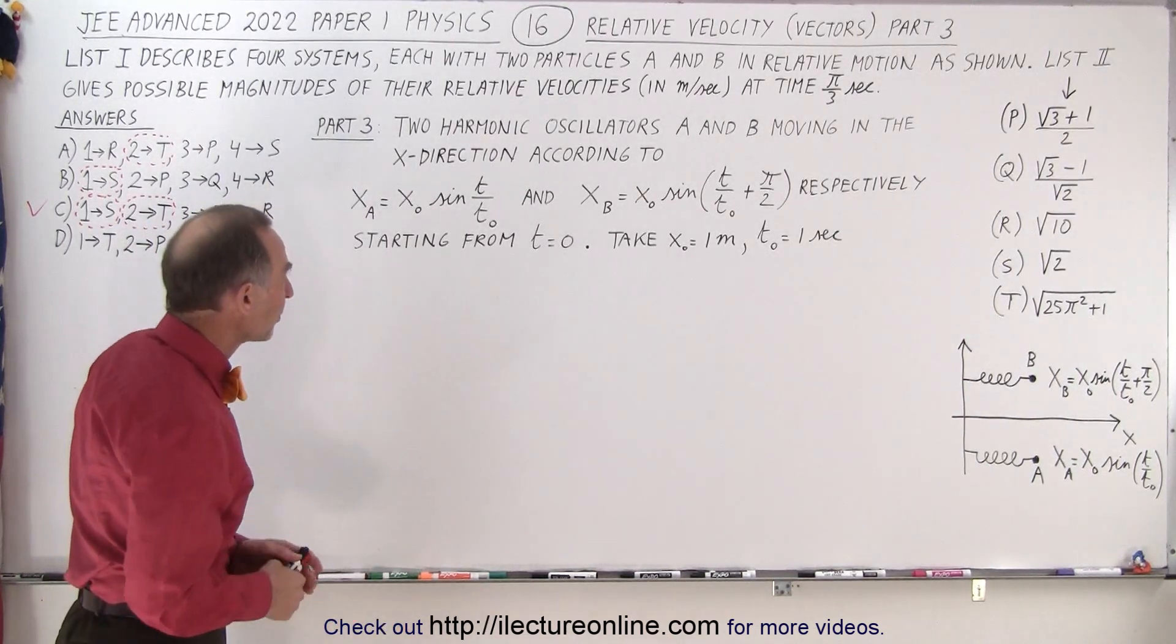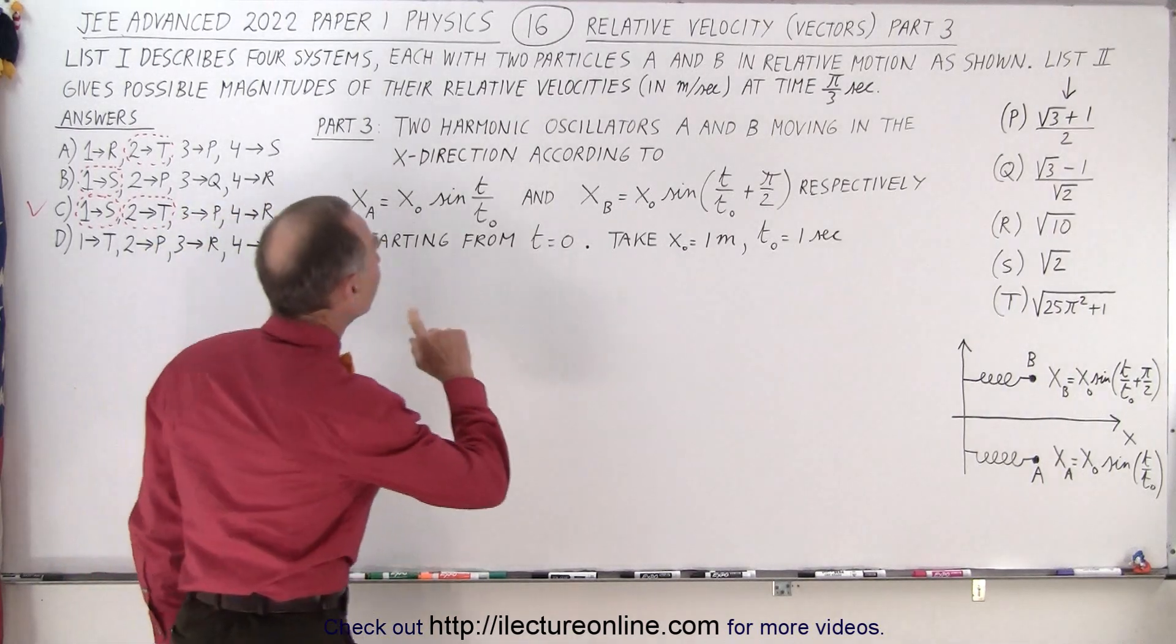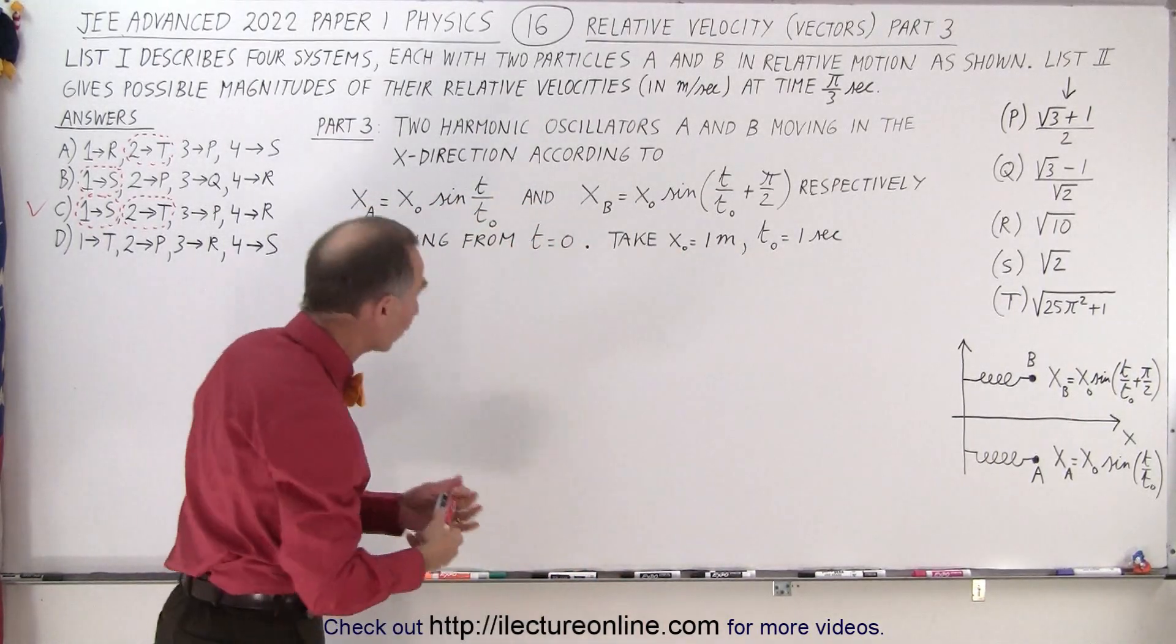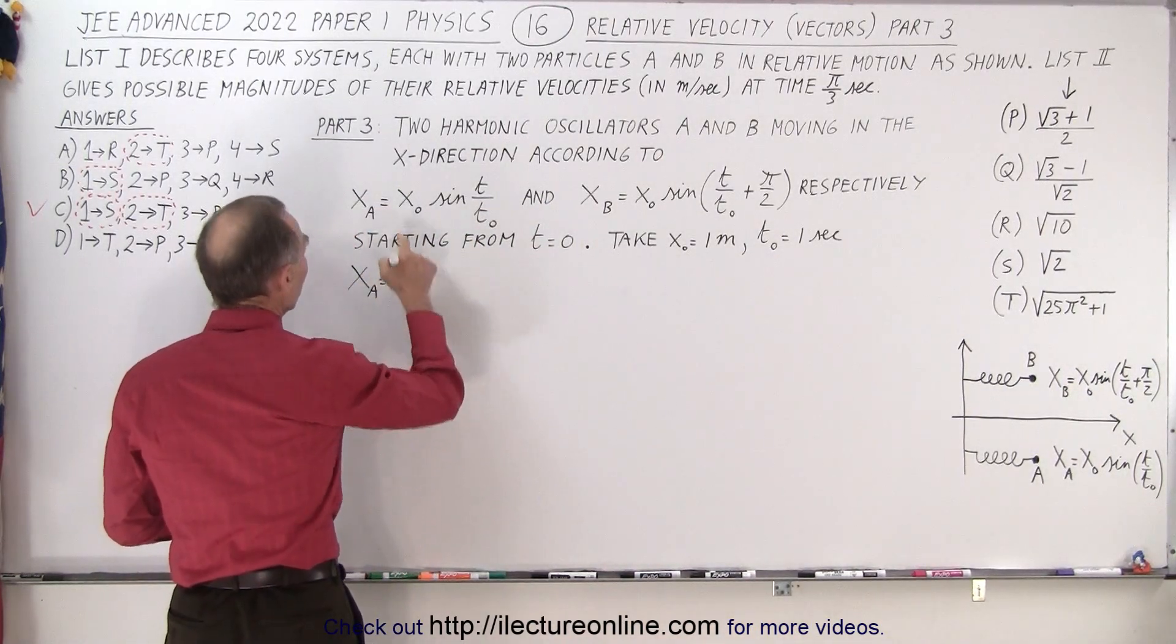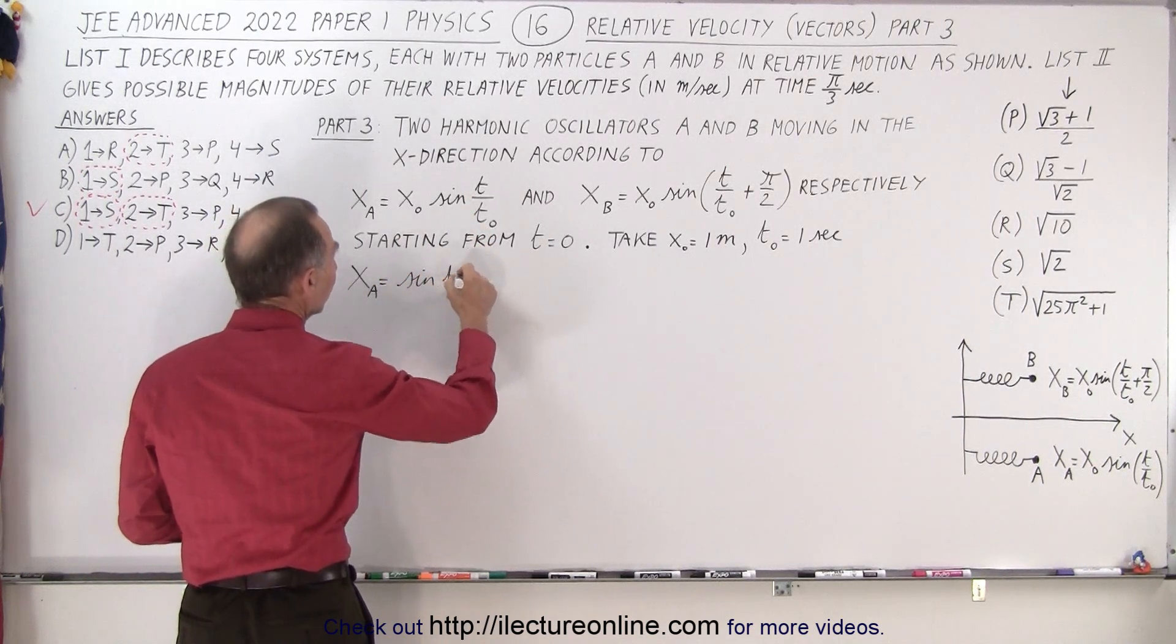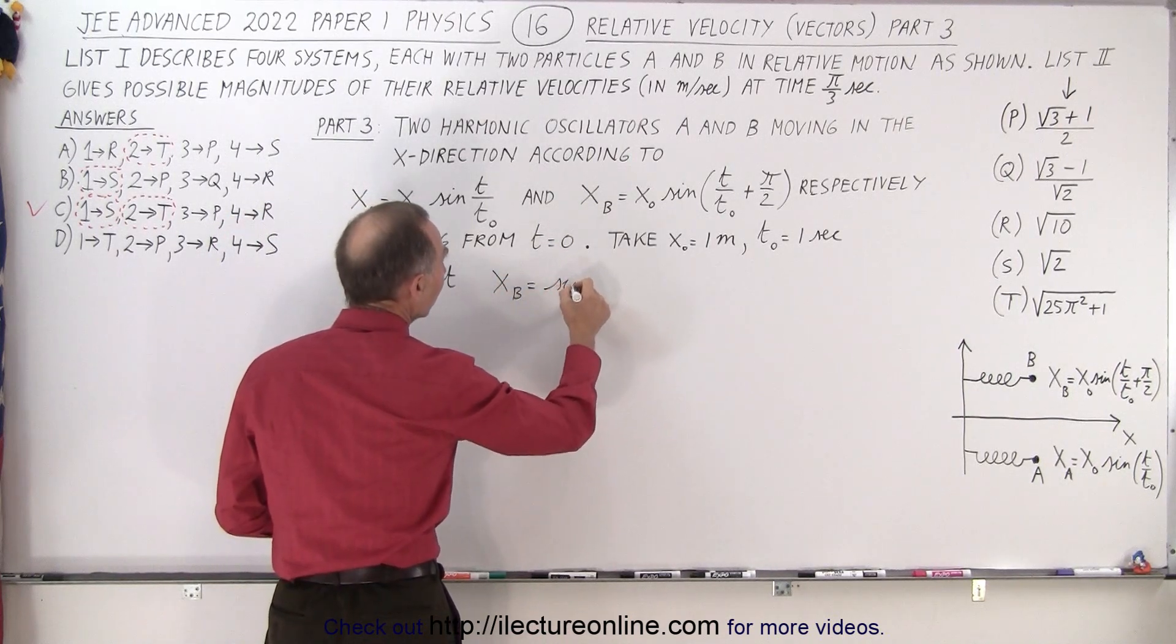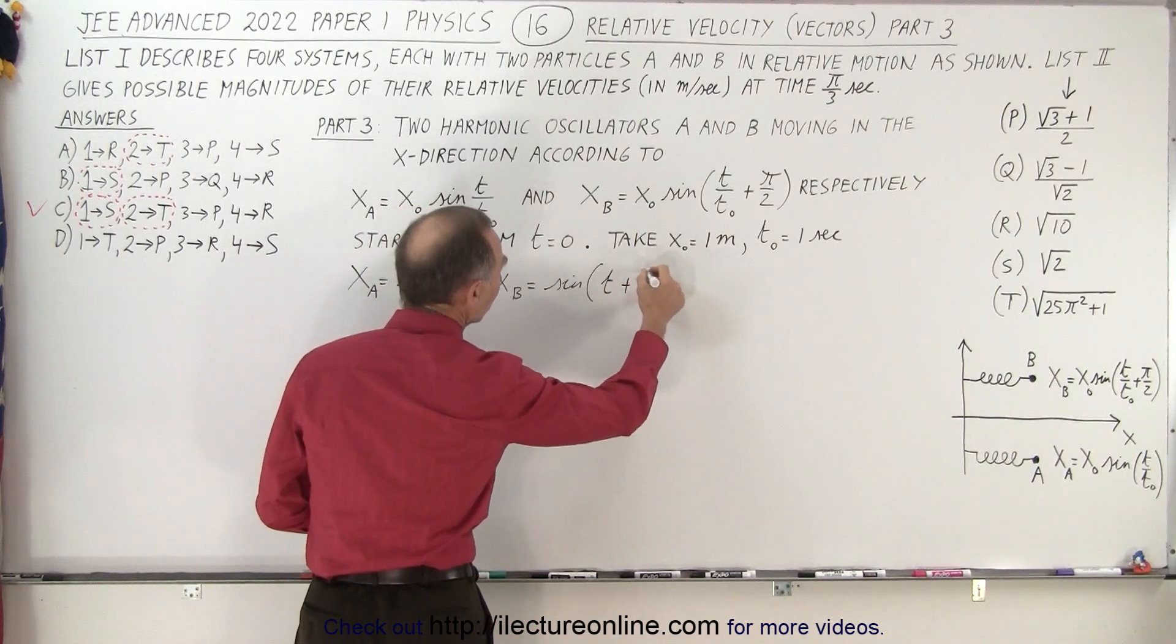All right, so here's the two particles. We have the two equations. Also, they tell us that x sub zero is one, and t sub zero is one. So we can actually rewrite those two equations as follows. We can write that x sub a is equal to one times the sine of t over t sub naught, which is simply the sine of t. And here, x sub b, that can then be written as sine of t plus pi over two.